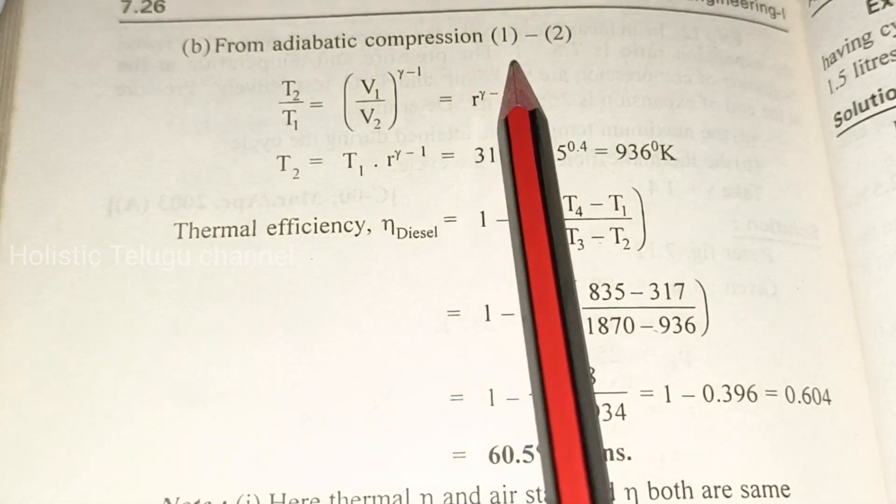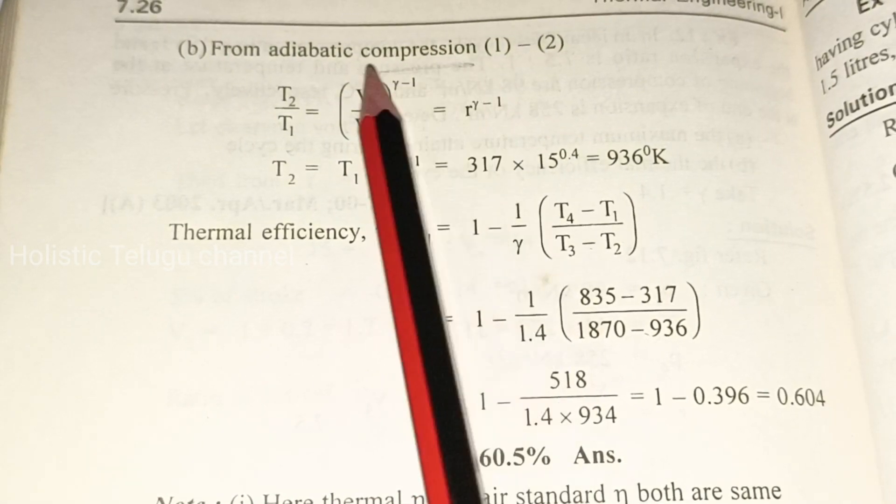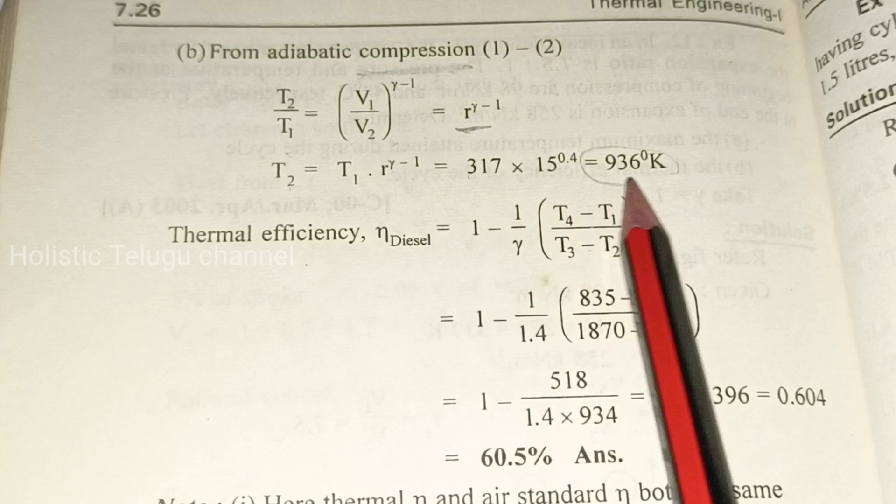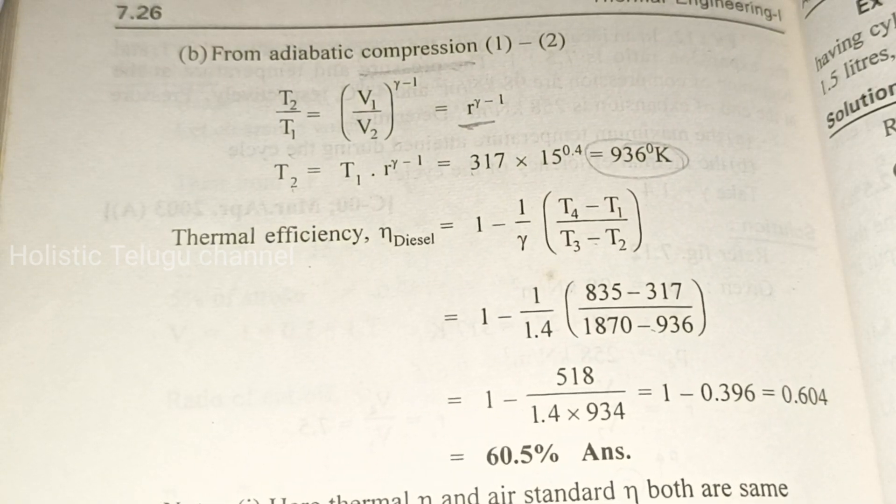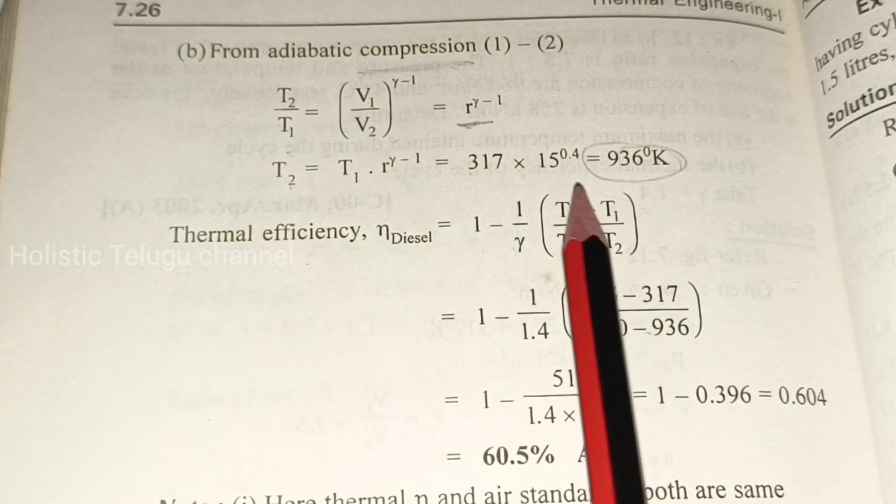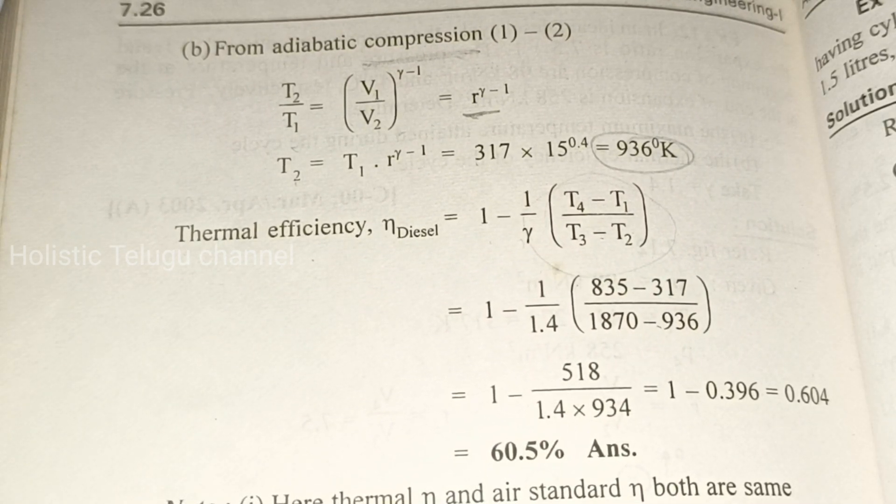From adiabatic compression (1→2): T2/T1 = (V1/V2)^(γ-1). The compression ratio is 15, so T2 = T1 × r^(γ-1) = 317 × 15^0.4 = 936 K.